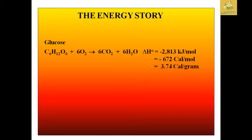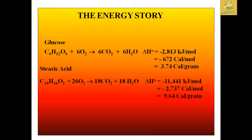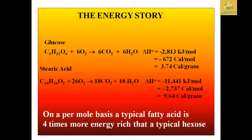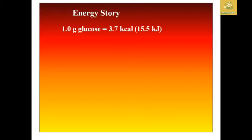Regarding energy storage, the energy released from glucose is 2813 kJ/mol, or 672 kcal/mol, equivalent to 3.74 kcal/g of glucose. For stearic acid the energy is 11,441 kJ/mol, or 2737 kcal/mol, equivalent to 9.64 kcal/g. On a per-gram basis, fatty acids give approximately 4 times more energy than typical hexose sugars.